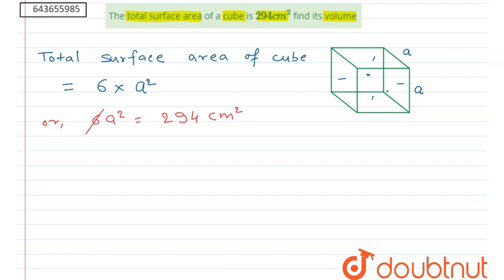So if we divide it by 6, it will be 49. So from here, side of cube equals square root of 49 cm, and that equals 7 cm.